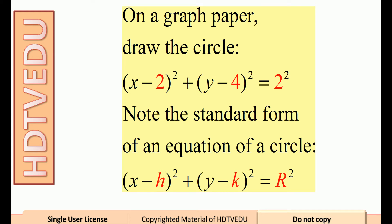On a graph paper, draw the circle x minus 2 squared plus y minus 4 squared equals 2 squared.